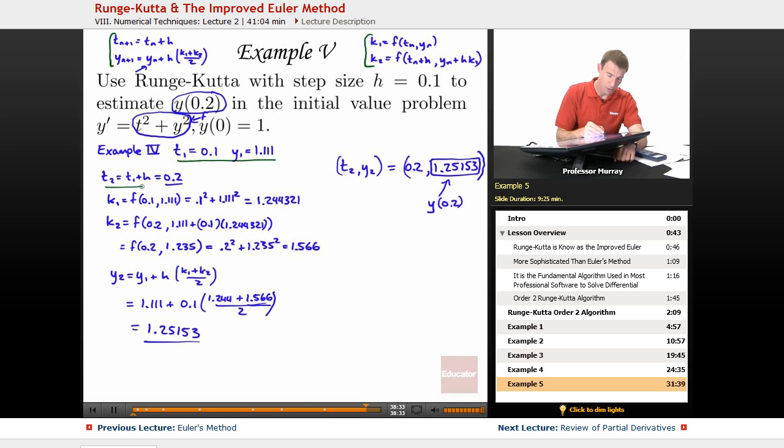And then we're going to run with those answers and run Runge-Kutta one more step to get to 0.2. So, t2 is just t1 plus h, that's our 0.2. And then I found k1 and k2 using these formulas here.